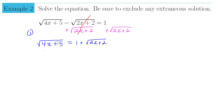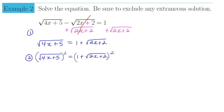The next step is to get rid of the radical by squaring both sides since it's a square root. When we square both sides, the square root on the left side of the equation cancels with the squaring operation. So the left side simplifies to just whatever was underneath the radical: 4x + 5.